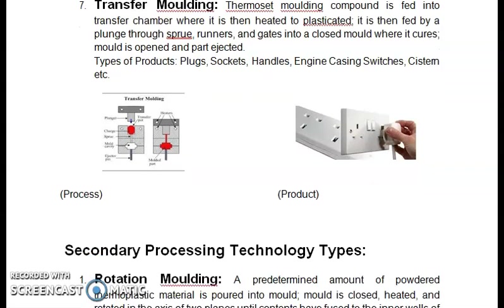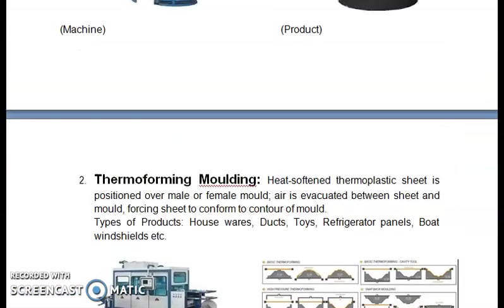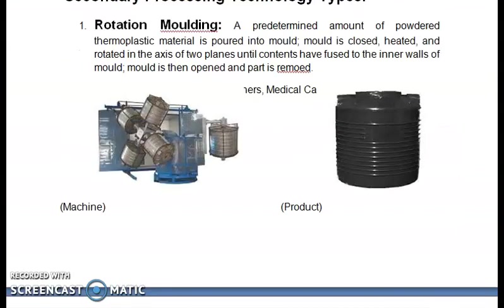The secondary processing technology types. First is rotational molding: a predetermined amount of powder thermoplastic material is poured into the mold. The mold is closed, heated, and then rotated on two axes until the contents have fused to the inner walls of the mold. The mold is then opened and the part is removed. Water tanks are generally made by this process.